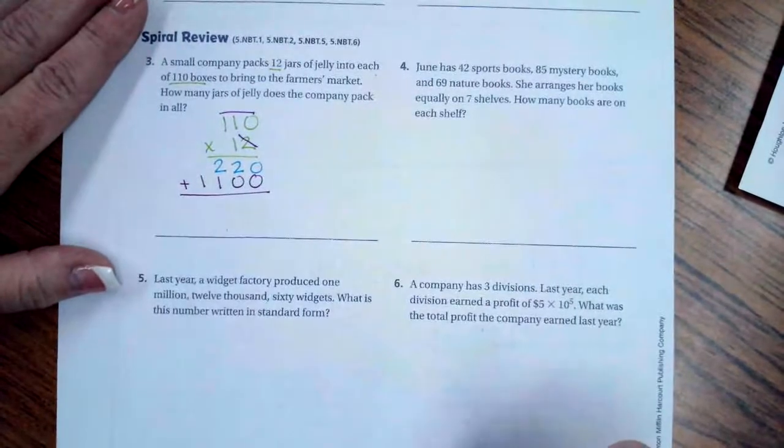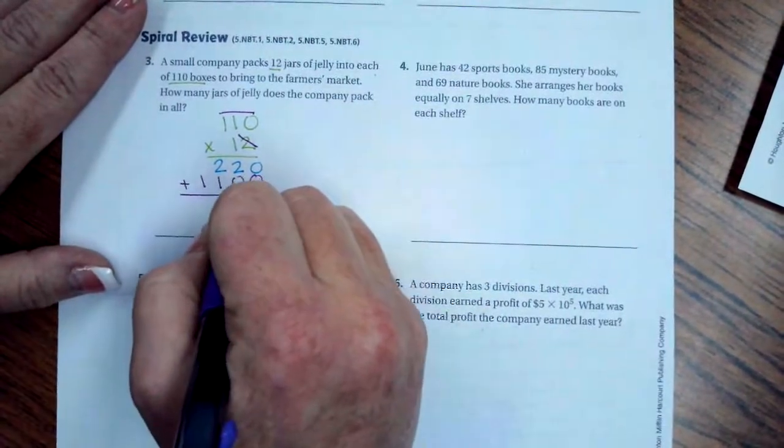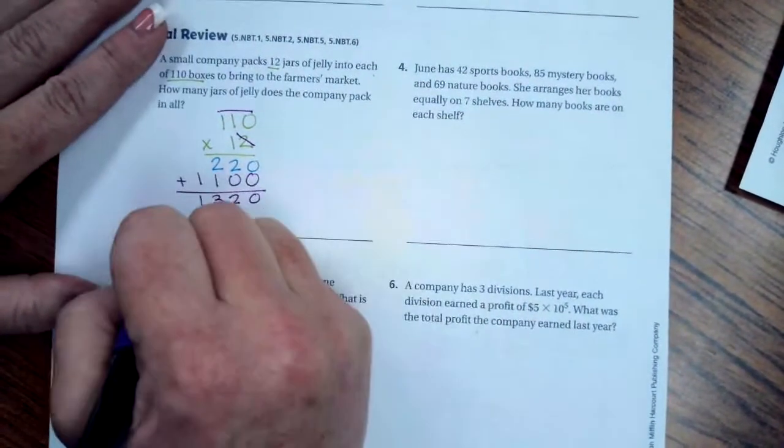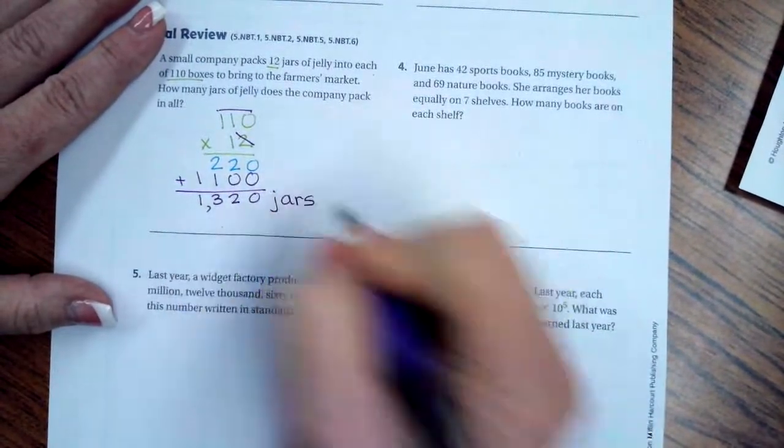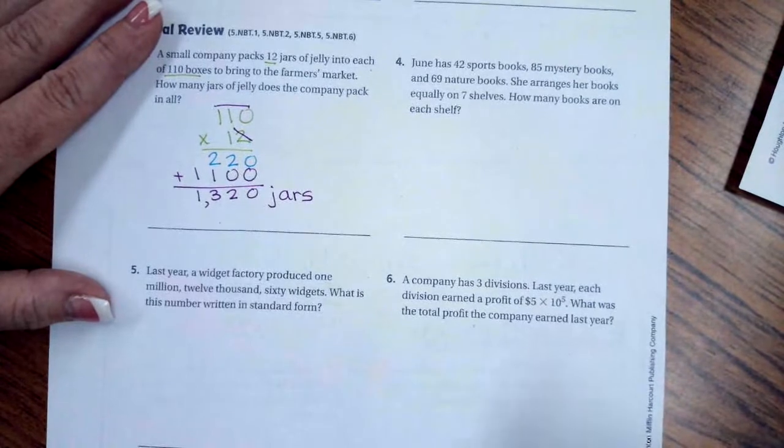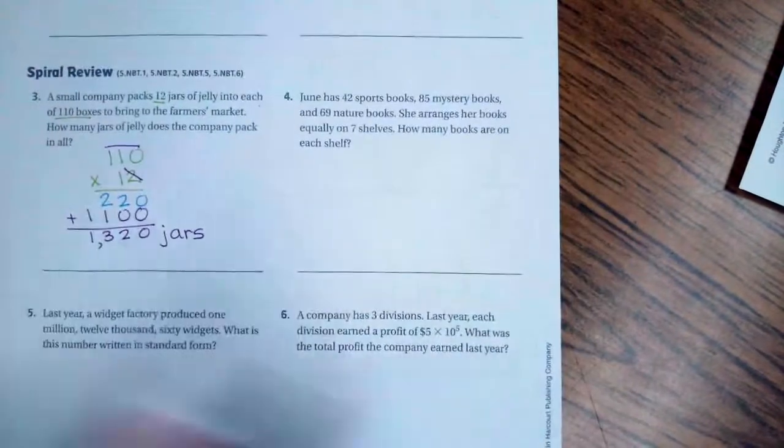And then 1 times 110 is 110. So I'm going to add those two together. 0, 2, 3, 1, which means jars. 1,320 jars.